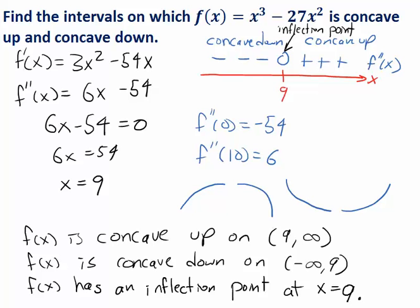I misspoke a couple of times in this video, so let's summarize it all again. We want to figure out where the function is concave up and concave down using a second derivative sign chart. We take the first derivative and then the second derivative, figure out where the second derivative is zero, and plot that on a number line. We check a point in each interval to decide whether the second derivative is positive or negative. If positive, the function is concave up on that interval; if negative, the function is concave down. Any point where the function changes concavity is called an inflection point.